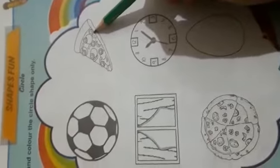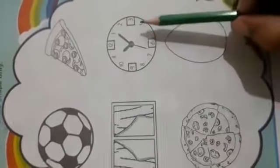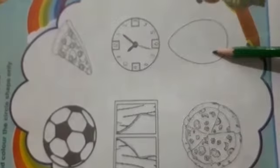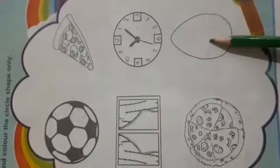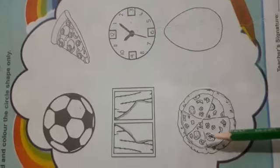No, it is triangle. This shape is square. This is circle, and this shape is oval. And pizza's shape is circle.